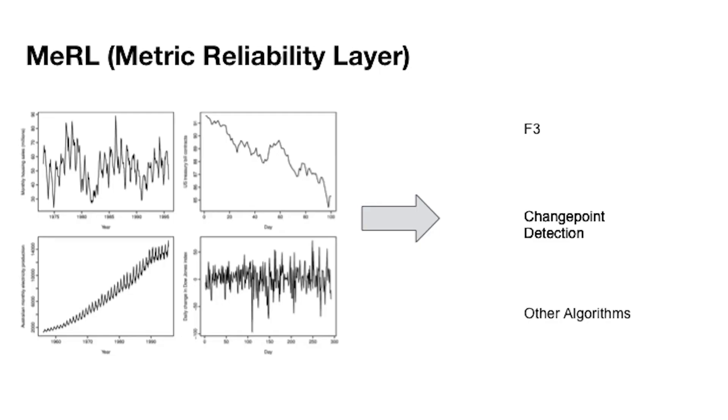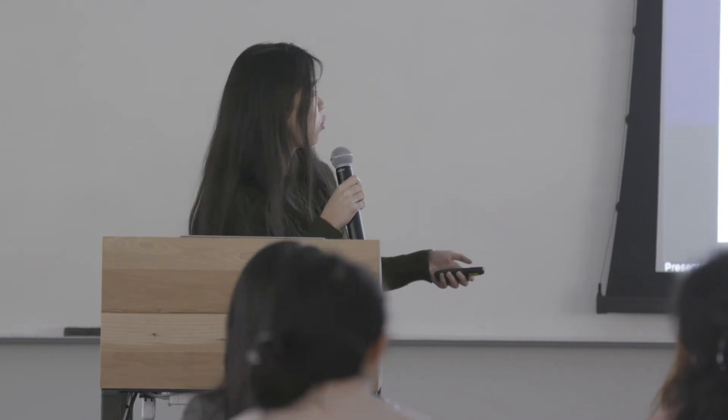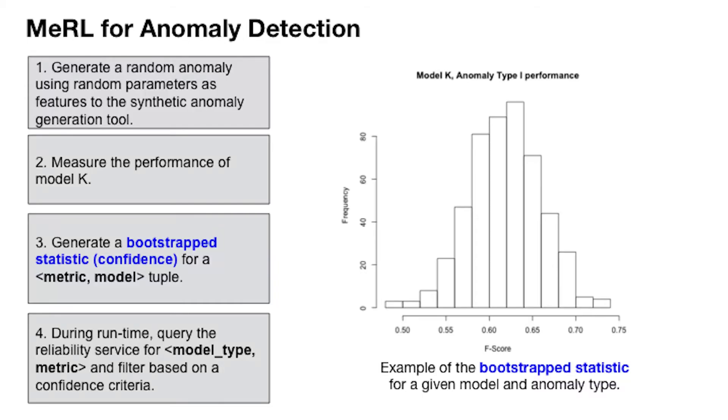Some progress has been made toward a point where, as a service owner, your metric is automatically tracked without you doing anything. What we're lacking to get from here to there is that service owners — even as lay people — are currently expected to accurately determine which algorithm, F3 or change point or other anomaly detection algorithms, is appropriate for their metric. That's where MERL — Metric Reliability Layer — comes in. MERL solves this problem by producing a set of MERL scores: a high MERL score means high confidence that a particular algorithm will perform well on a particular metric, and a low score means the opposite.